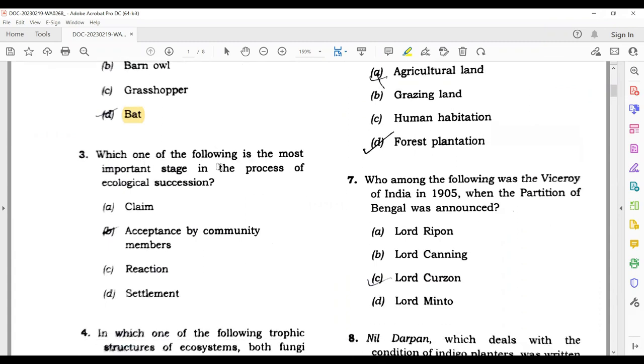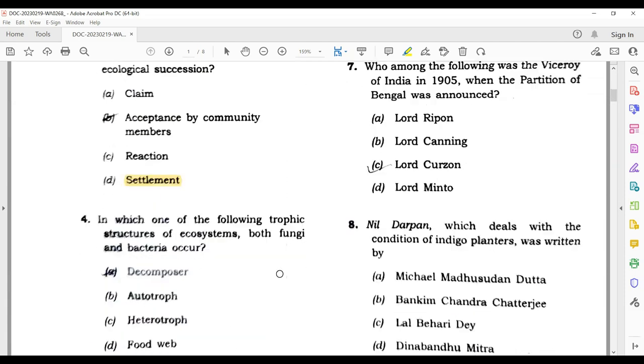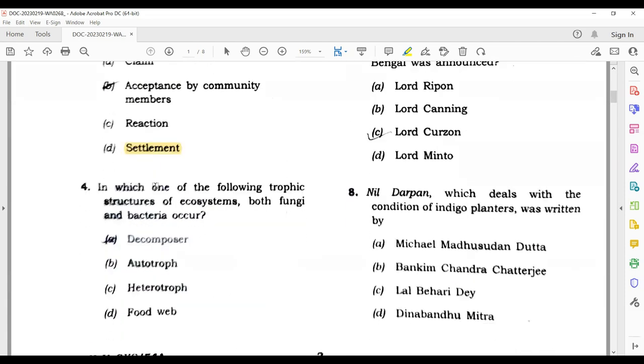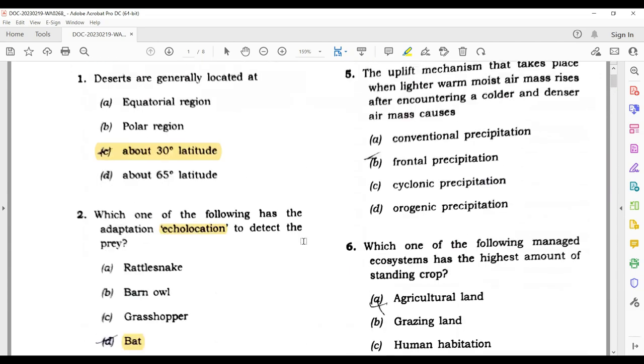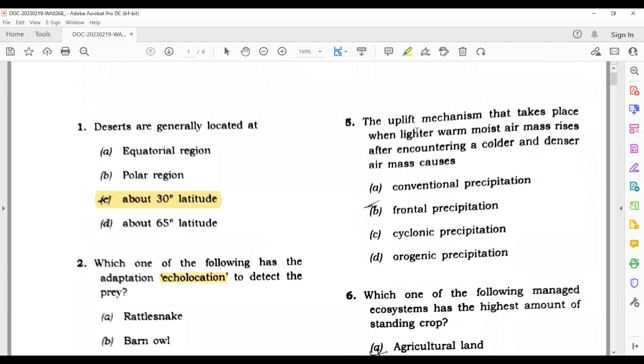Settlement is your correct answer to this question. Now, in which one of the following trophic structures of ecosystems do both fungi and bacteria occur? Simple answer: decomposers. Now let's come to question number five. The uplift mechanism that takes place when light, warm, moist air masses rise after encountering a colder and denser air mass causes what? Here the answer is frontal precipitation.